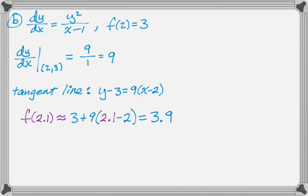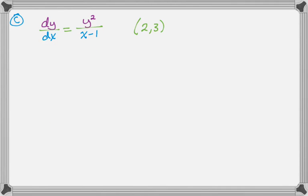Done with that part. And then Part C is, I guess you might be expecting, to find the particular solution. So we want the particular solution through (2,3). So I've kind of color coded, so everything with a y is in purple, I think. Everything with an x is in blue. So I'm going to separate.